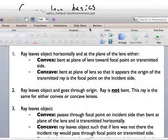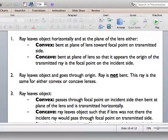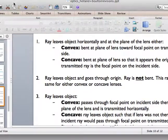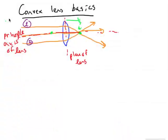The second principal ray leaves the object and goes through the origin. The ray is not bent. This ray is the same for either a convex or a concave, so that one's easy to remember. This one right here goes through the origin and it's not bent. We'll label that one as 2.